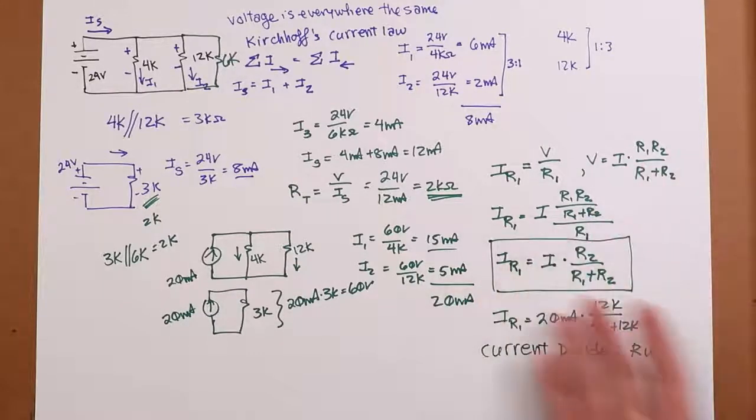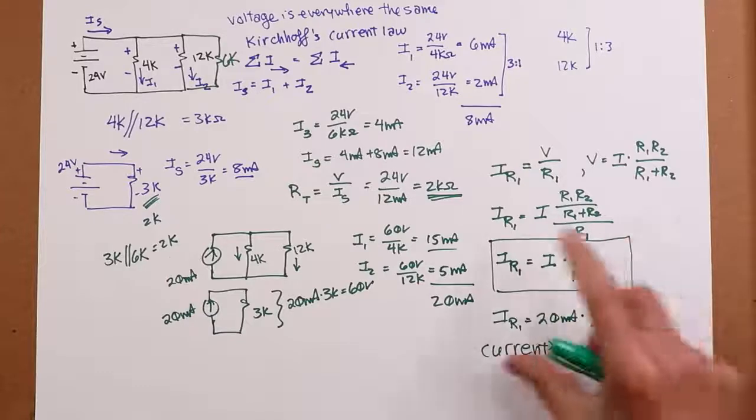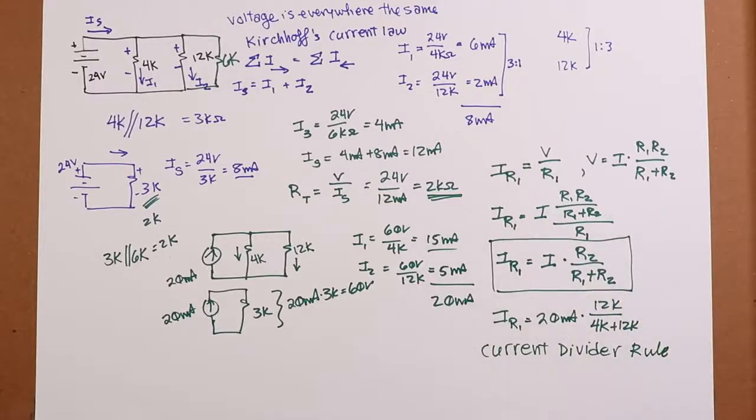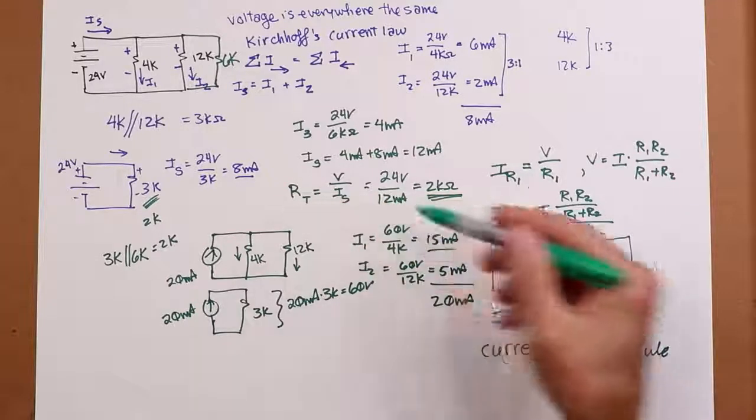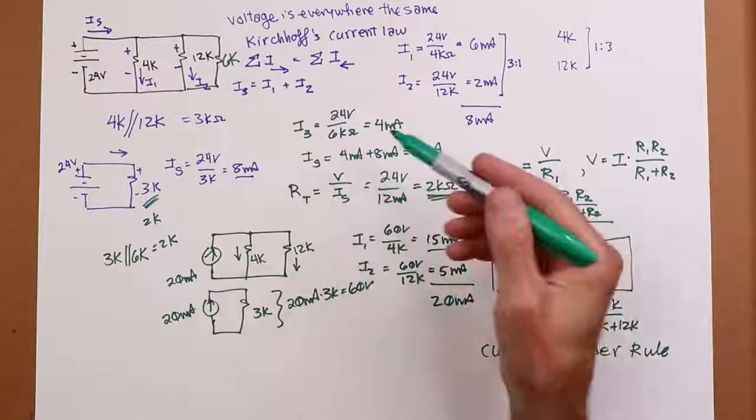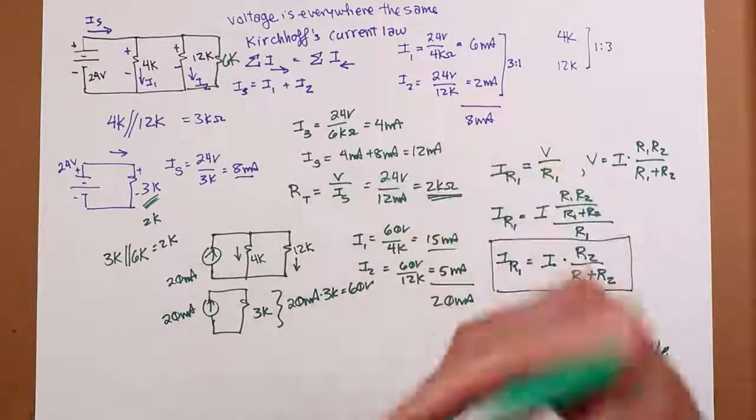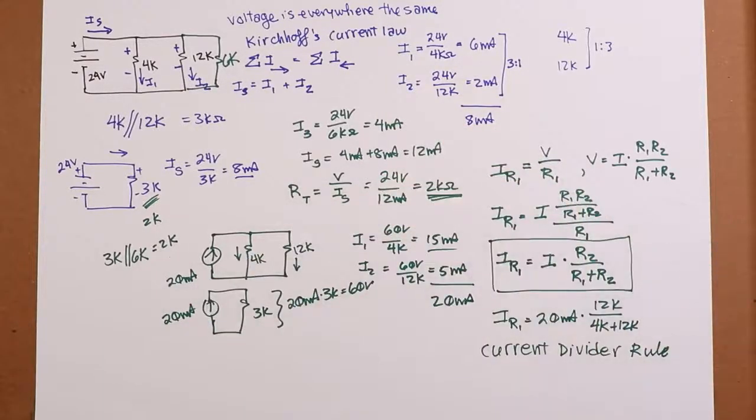So you can come up with an N resistor version of this, but the equation isn't like a nice, convenient, compact little equation. So you're just better off doing what we did here. In other words, find the effective R, find the V, and then just use Ohm's law. This is just a nice little shortcut to remember if you have two components.